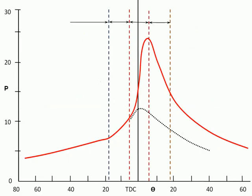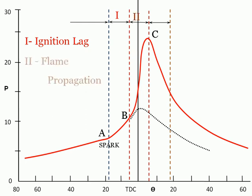The combustion process of SI engines can be divided into three broad regions: 1. Ignition lag or flame development, 2. Flame propagation, and 3. After burning or flame termination.